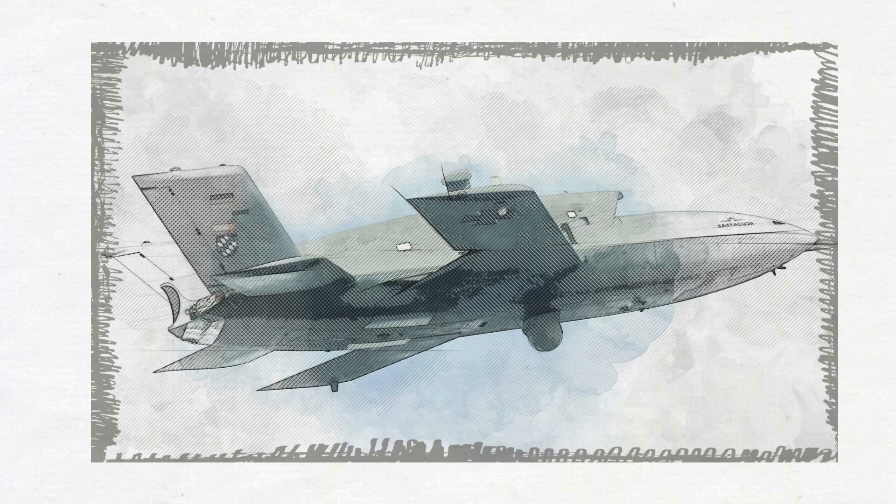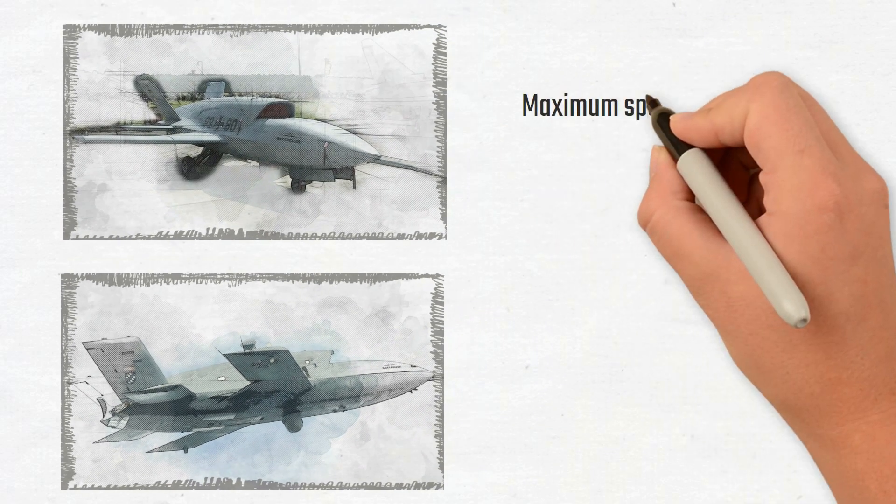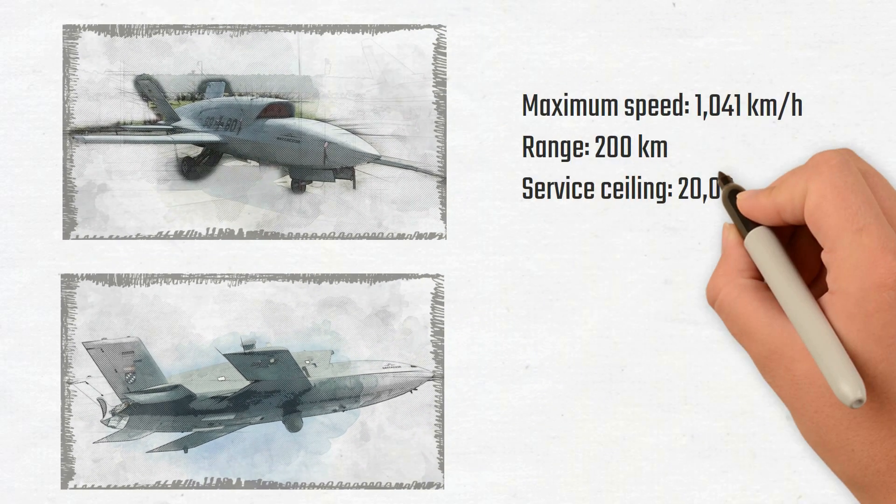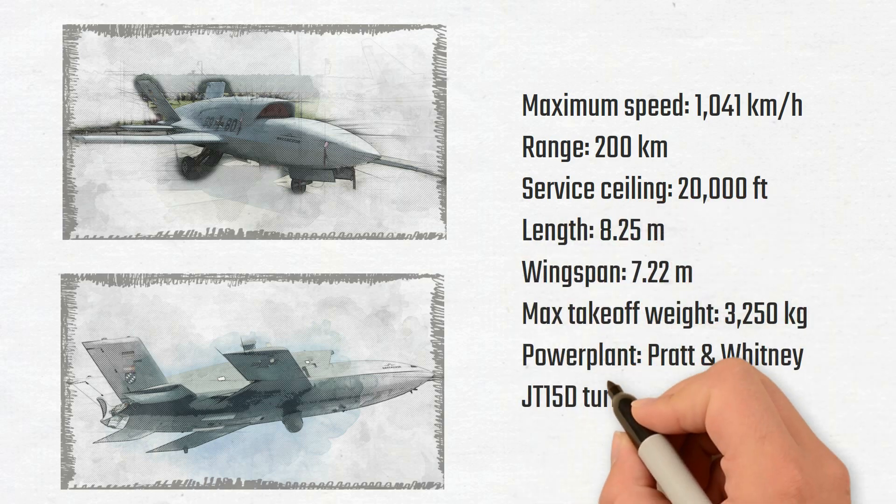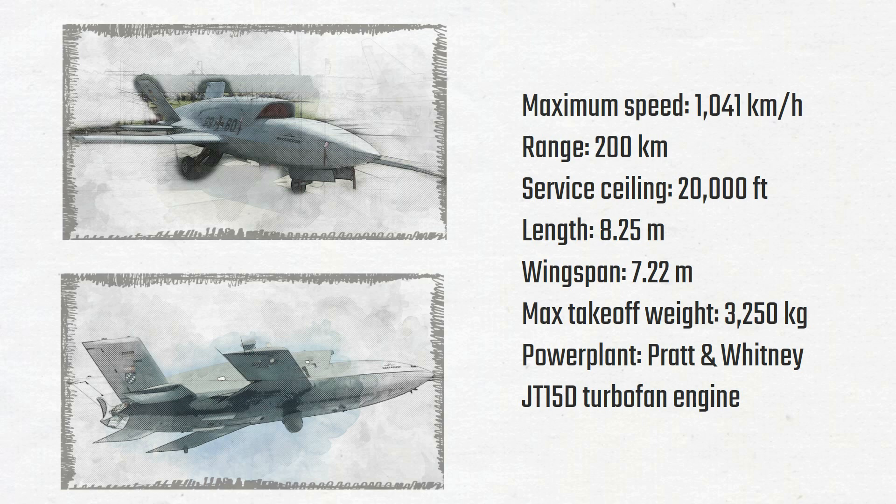The Barracuda was the first military drone of its kind in Europe, yet the project was abandoned after its inaugural flight in 2006. It can fly at a top speed of more than 1,000 kilometers per hour and has an endurance of about 17 hours.